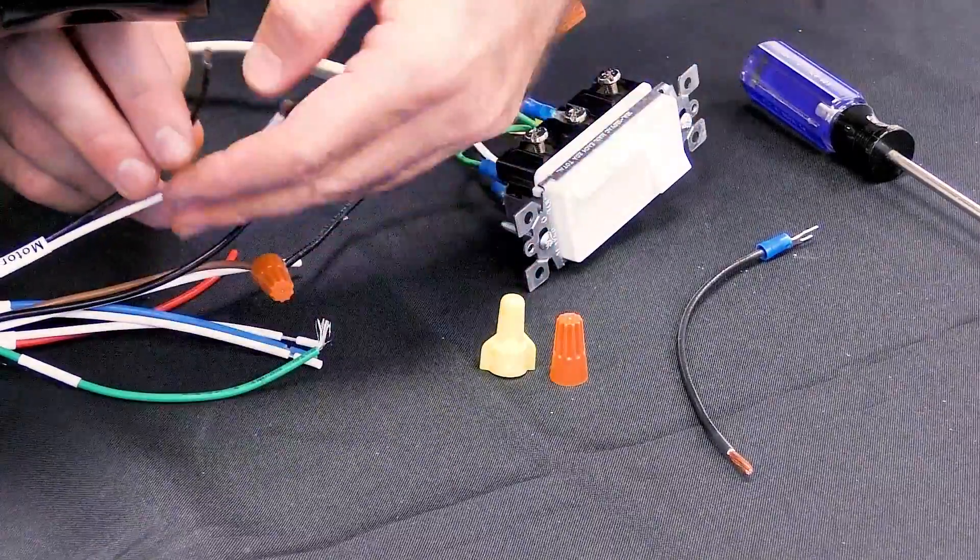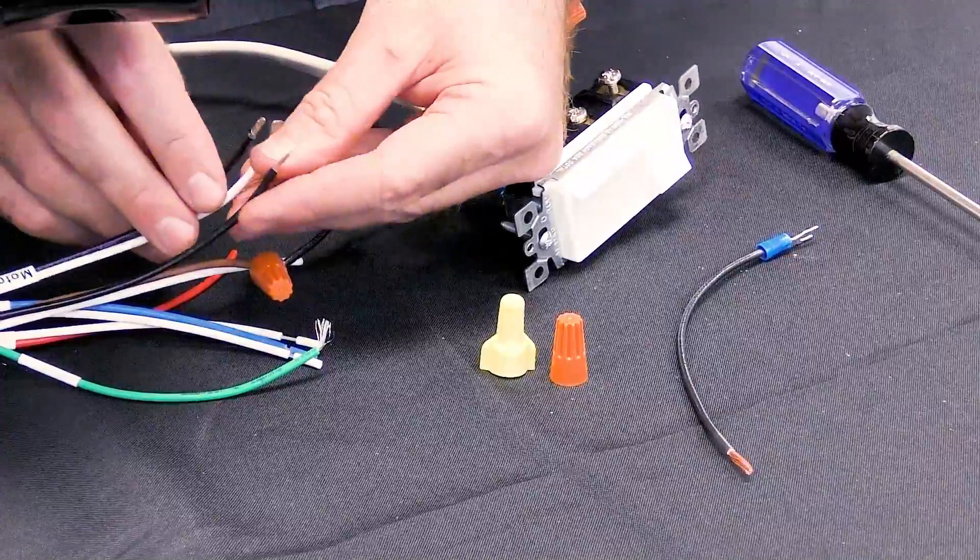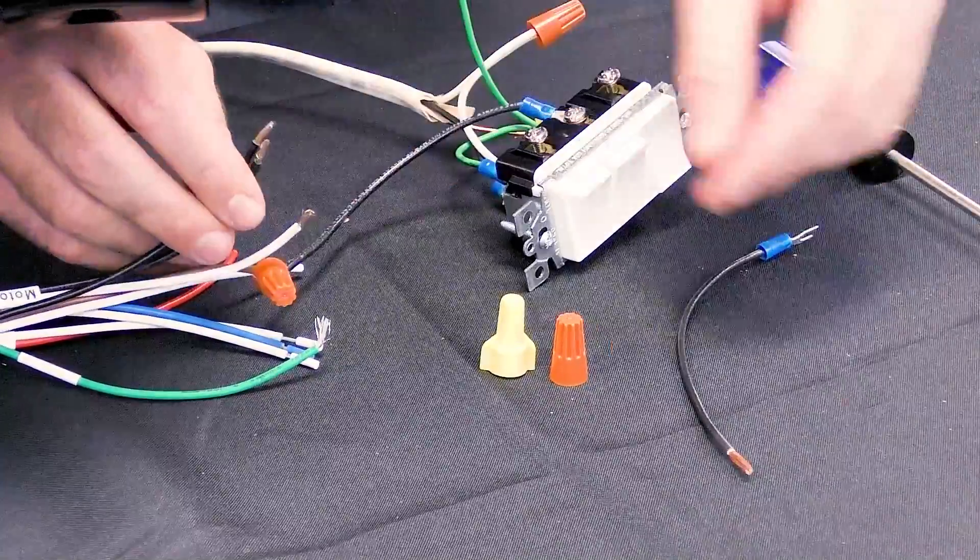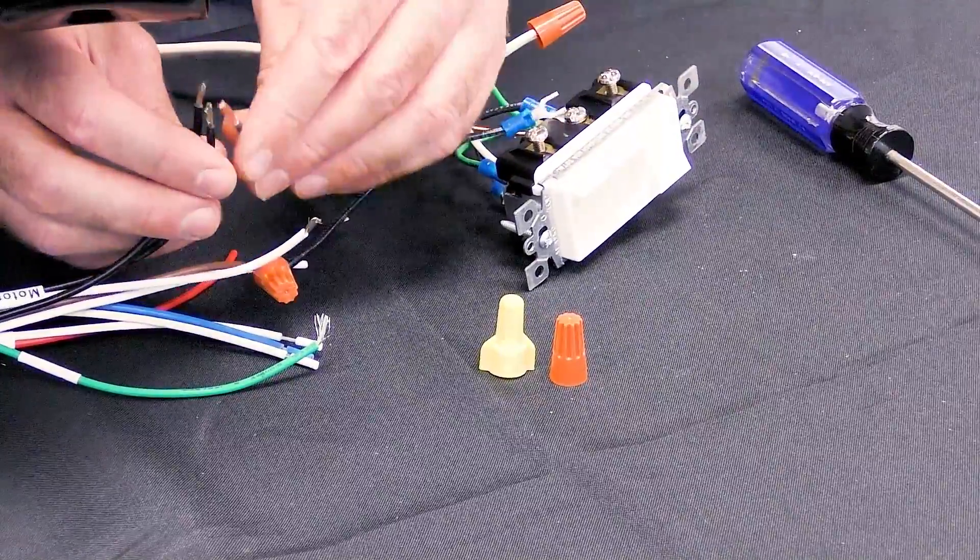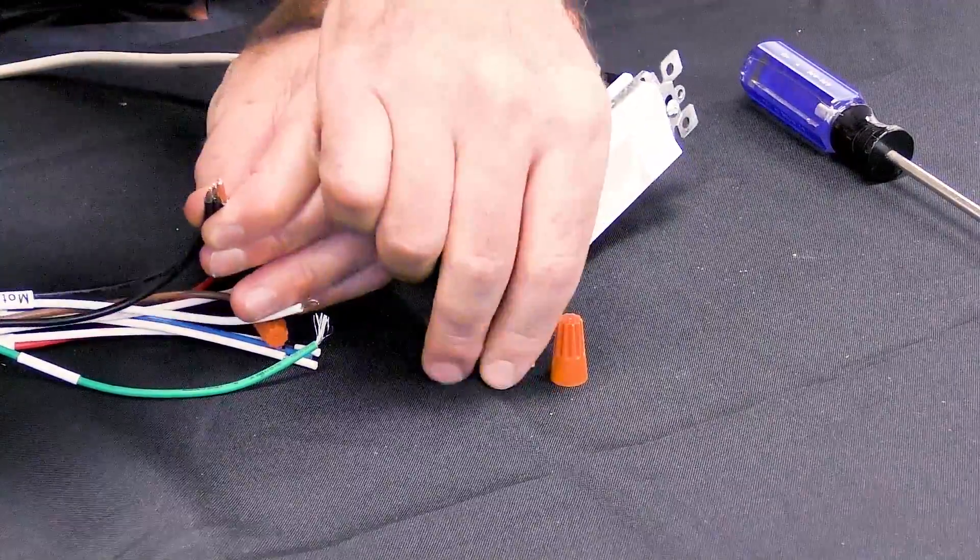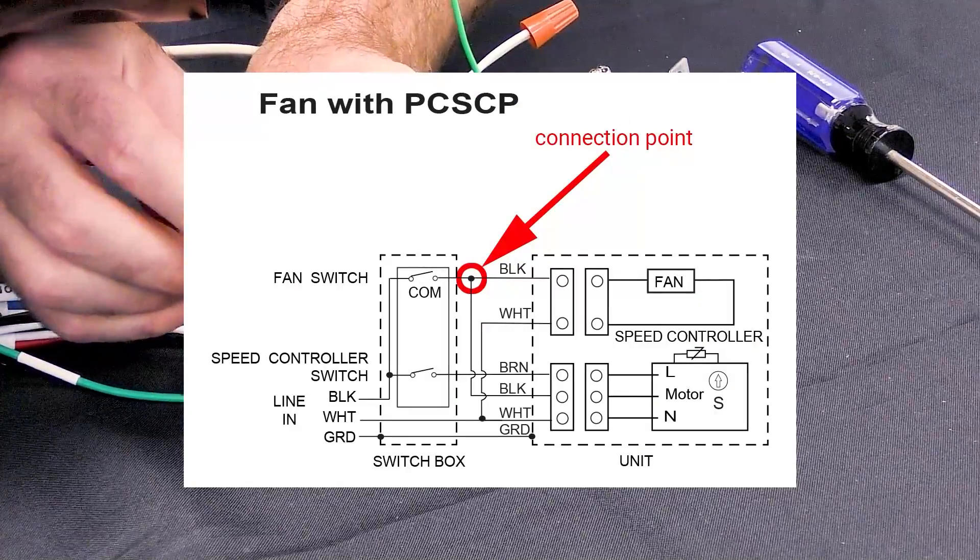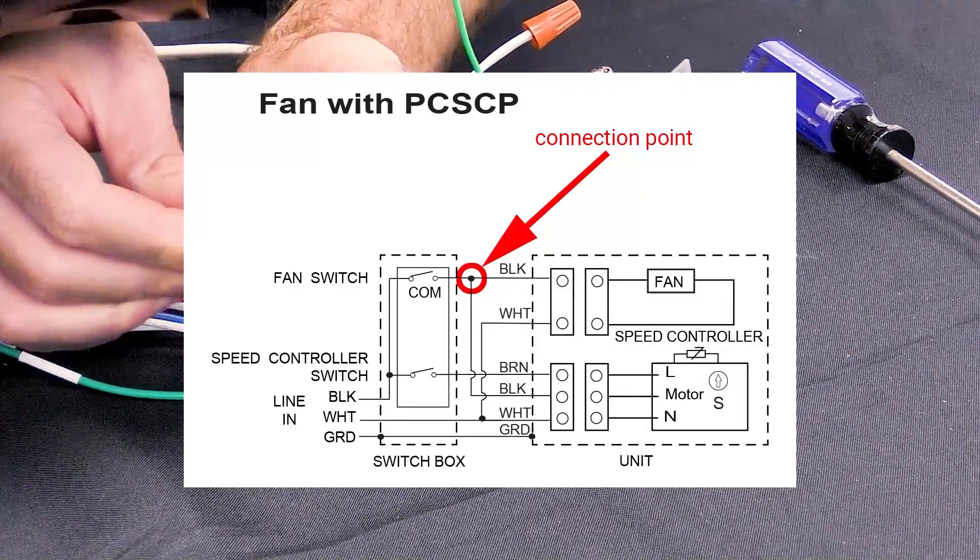Then, connect the black wires from both the motor and the control module to the load side of your switch. This connection point is circled on the corresponding wiring diagram on your screen for clarity.